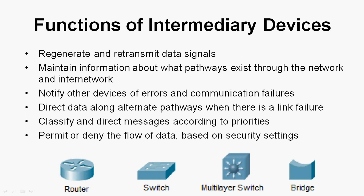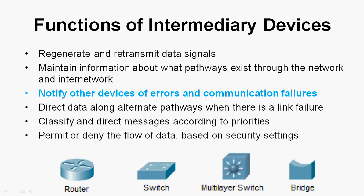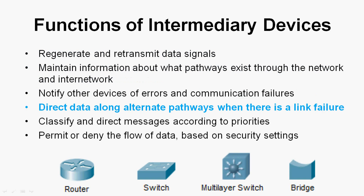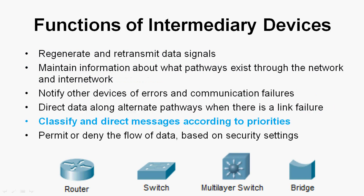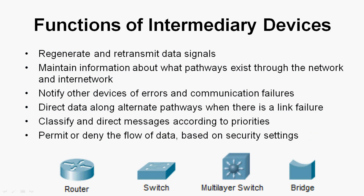Coming back, we will see the functions of intermediary devices. They regenerate and retransmit data signals, maintain information about pathways through the network and internetwork, notify other devices of errors and communication failures, direct data along alternate pathways when there is a link failure, classify and direct messages according to priorities, and permit or deny the flow of data based on security settings.